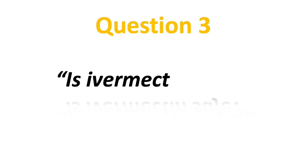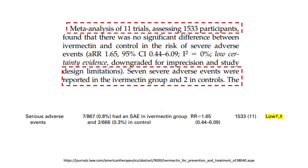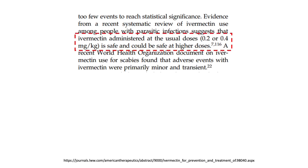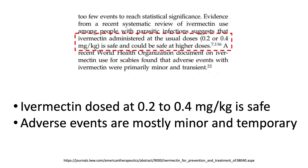The third question: is ivermectin safe? In the 11 trials assessing 1,500 participants, the meta-analysis concluded there were no differences between ivermectin and placebo in the risk of severe adverse events. The quality of evidence is however still low certainty because there were too few events to reach statistically significant differences. It is important to note that when ivermectin is used for parasitic infection at the dose of 0.2 to 0.4 mg per kilogram, it is considered safe and the adverse events are mostly minor and temporary according to the WHO document.